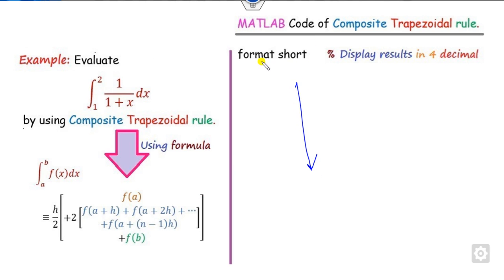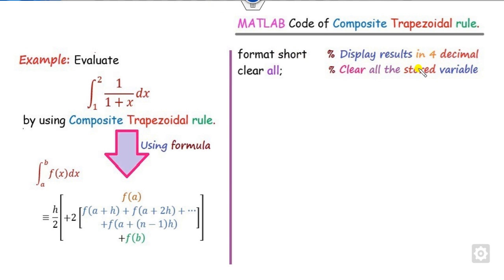You start with a format command. If you want to display results up to four decimal places use format short; if you want up to sixteen or eight decimal places, use format long. After that, clear all stored variables and then clear the screen.